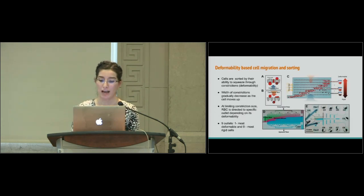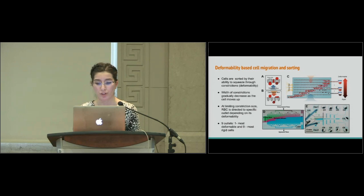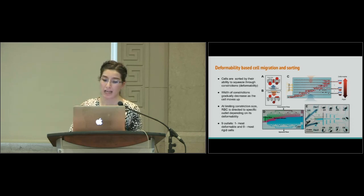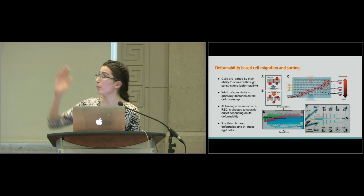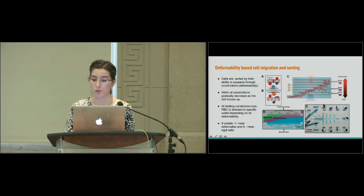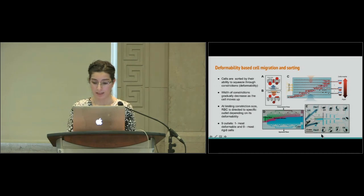This is our device—an actual picture and a schematic. It basically mimics the movement of red blood cells through the microvasculature. It consists of rows of constrictions through which the cells move. Cells are introduced at the lower left corner and move horizontally and also upward toward the right. All cells will move horizontally, but only those deformable enough to squeeze through the constrictions will move upward. This way we get deformability-based sorting of each individual cell. There are nine outlets: outlet one corresponds to the most deformable cells, outlet nine to the most rigid.